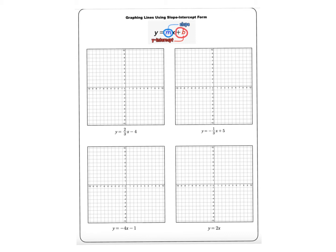If m is positive, your first move is going to be up — that's the number on top of the fraction — and the bottom of the fraction always tells you how many to go right. If it's a negative slope, then you go down that many first, and you always go right. So: positive means up first, negative means down first.